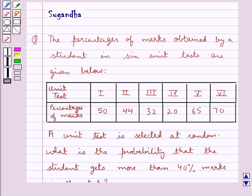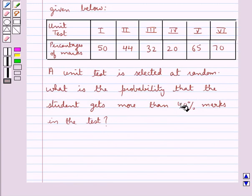A unit test is selected at random. What is the probability that the student gets more than 40% marks in the test?